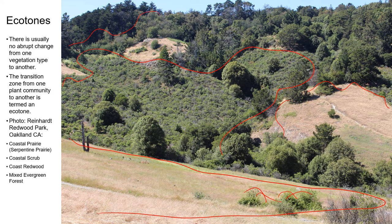From a distance it can look as if there's a very clear delineation between the edges or margins of these different plant communities. But if we were to walk closer in, we'd see that those margins aren't clearly defined. The plant composition doesn't change abruptly from one plant community to the next. Rather, there's a region of transition where the plant composition includes plants from both communities. This area of transition is referred to as an ecotone.